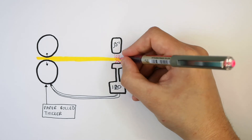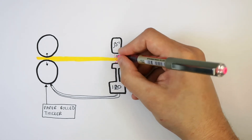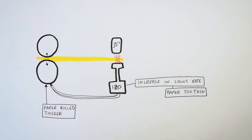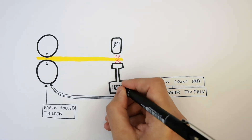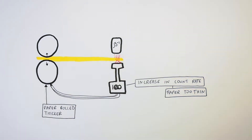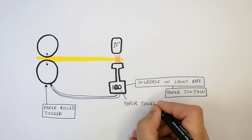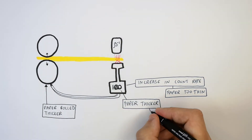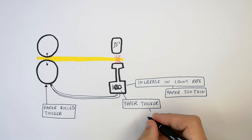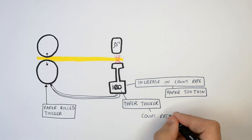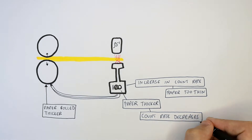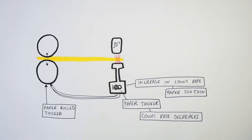The thicker the paper, the fewer beta particles will penetrate it. The factory wants to see a count rate of 100. Because the paper is being rolled thicker, fewer beta particles are able to penetrate, so the count rate drops back to 100. This is fed back to the machine to hold the rollers at that thickness.